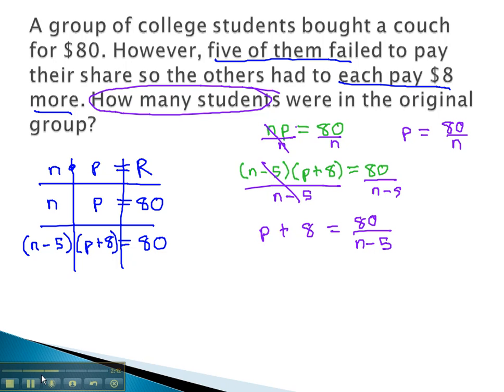We are now ready to make our substitution, replacing the p with 80 over n. We get 80 over n plus 8 equals 80 over n minus 5. This equation is now set up and ready for us to solve for n. In part 2 of this video, we'll come back and actually solve this equation to find the number of students.